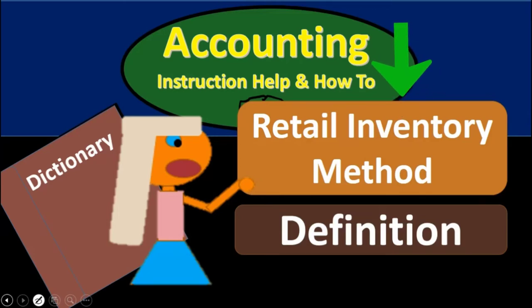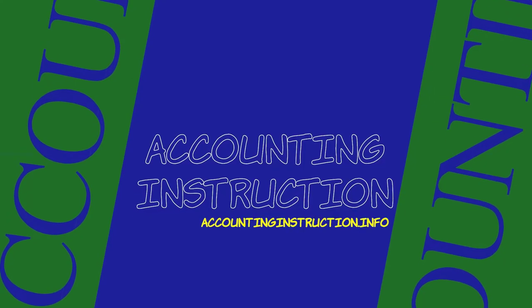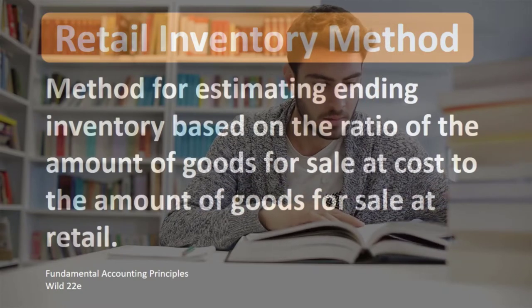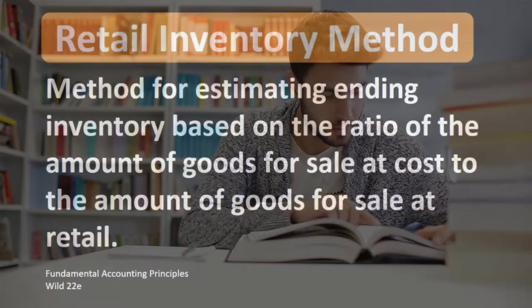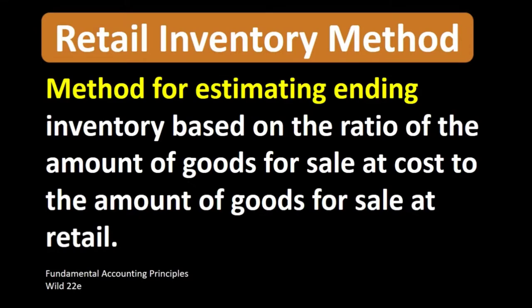Hello, in this lecture we will define the retail inventory method. According to Fundamental Accounting Principles, 22nd edition, the definition of the retail inventory method is a method for estimating ending inventory based on the ratio of the amount of goods available for sale at cost to the amount of goods available for sale at retail.